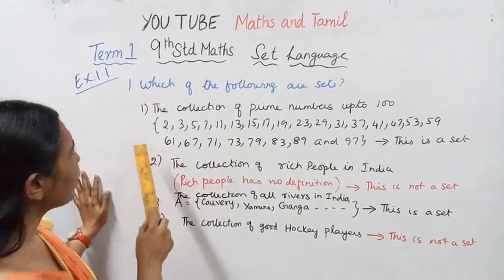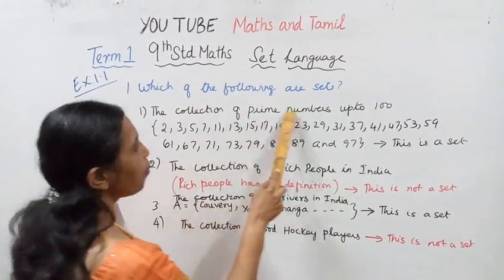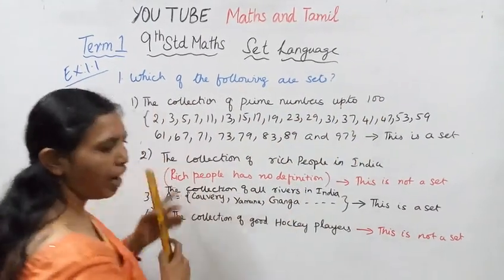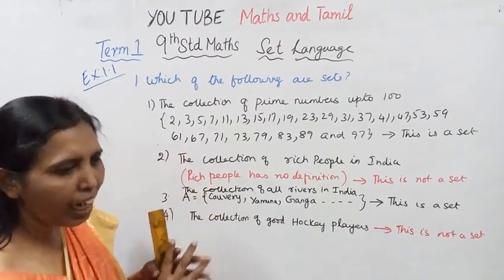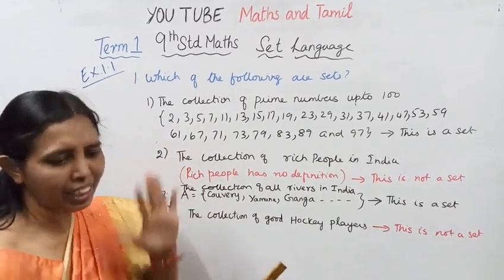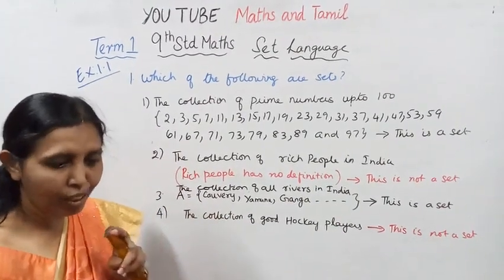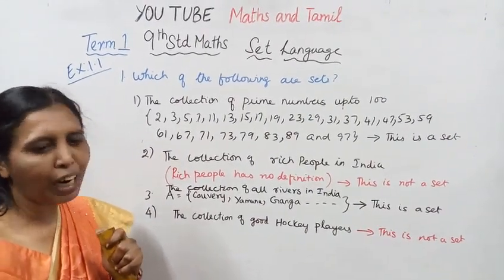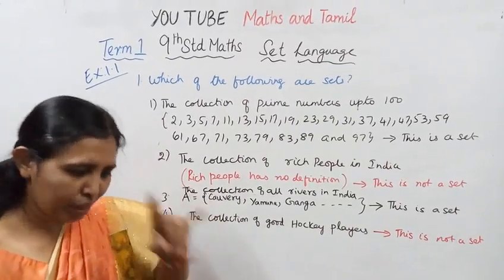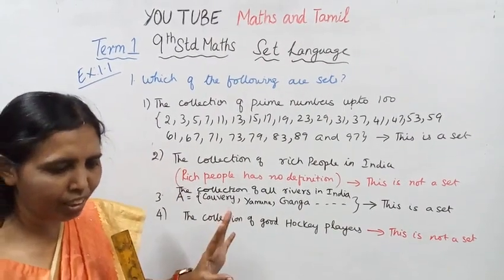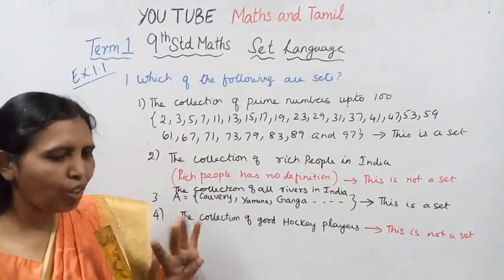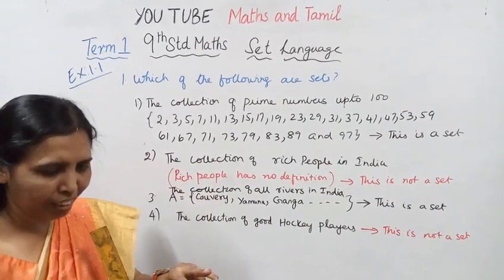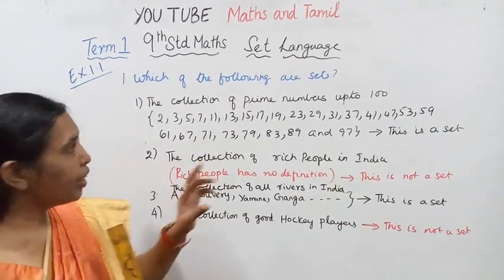The collection of prime numbers up to 100. Prime numbers are numbers which cannot be divisible by any number other than 1 and the number itself. A prime number is only divisible by 1 and itself.